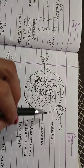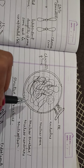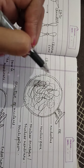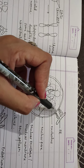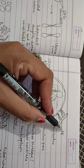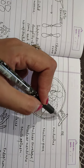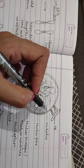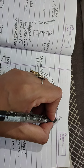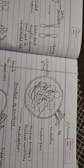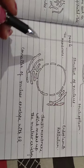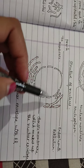The nuclear envelope is a double membrane structure. You can see convoluted tubule-like structures present around it — this is called the endoplasmic reticulum, or ER. Granular structures are also present on the ER, and these are called ribosomes. Ribosomes are present on the ER; we use the abbreviation ER for endoplasmic reticulum.